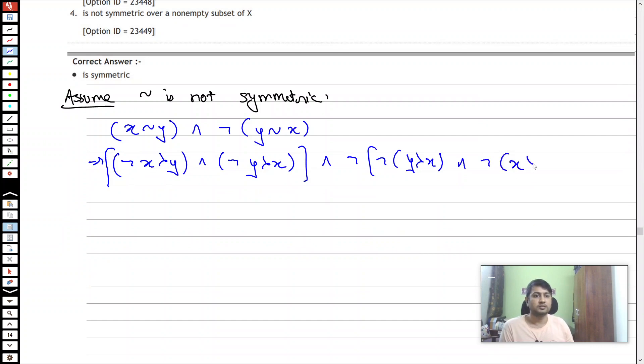And negation of x preferred to y. So notice here what we are saying: we are saying negation of x preferred to y.